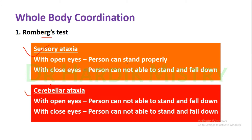In sensory ataxia, the person can stand properly with open eyes but cannot stand and falls down with closed eyes. With open eyes in sensory ataxia, the person can stand properly because the sensation or the visual sensations are intact. But as soon as the person closes his or her eyes, he or she cannot stand and falls down. That is sensory ataxia.